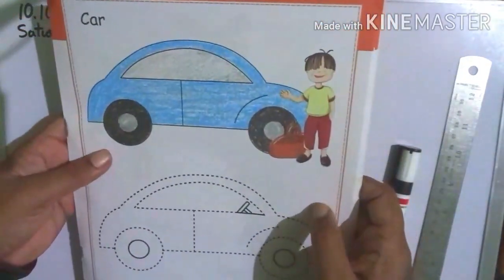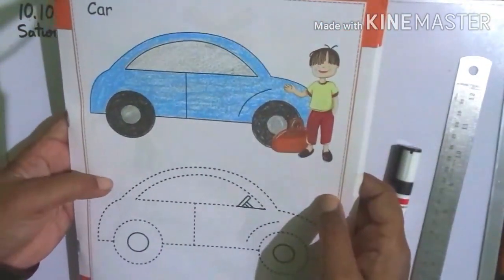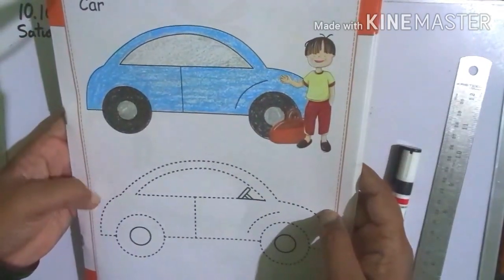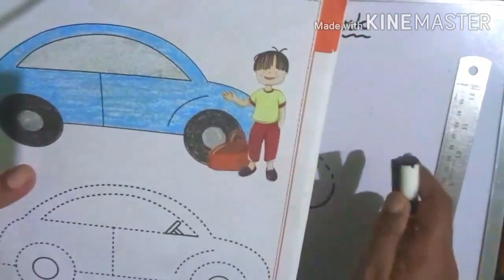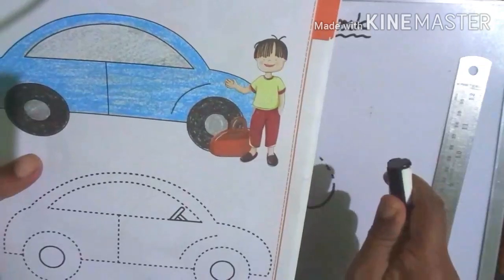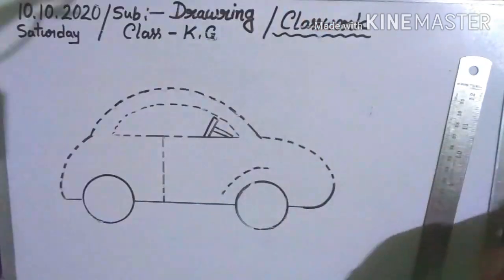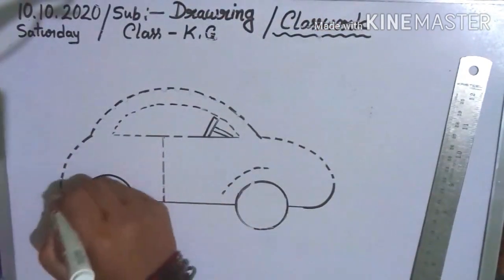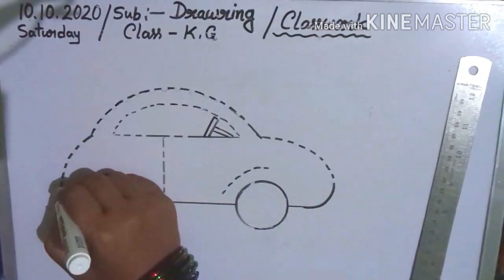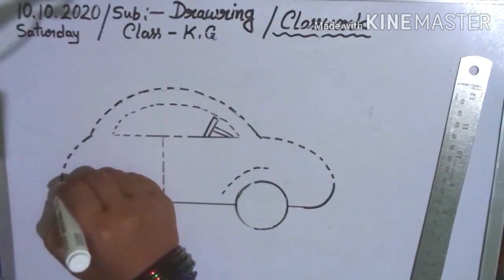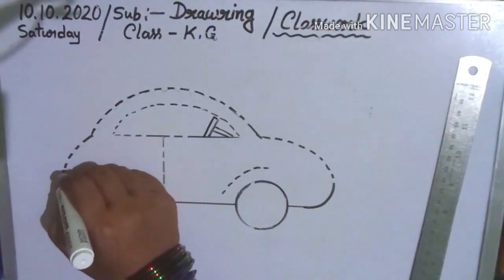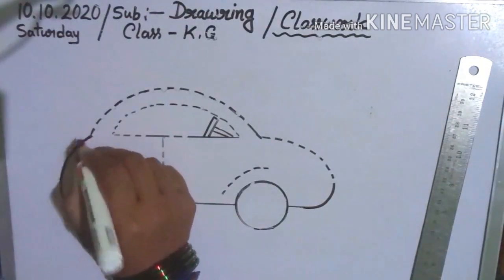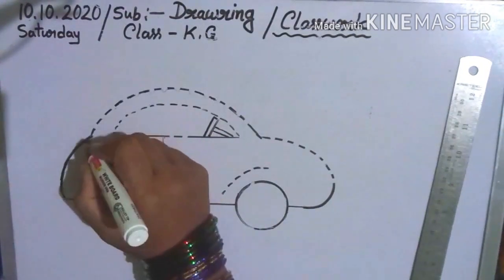See car. So first join the dots. Everyone follow me. So first join the dots. Children, everyone do it on your own.